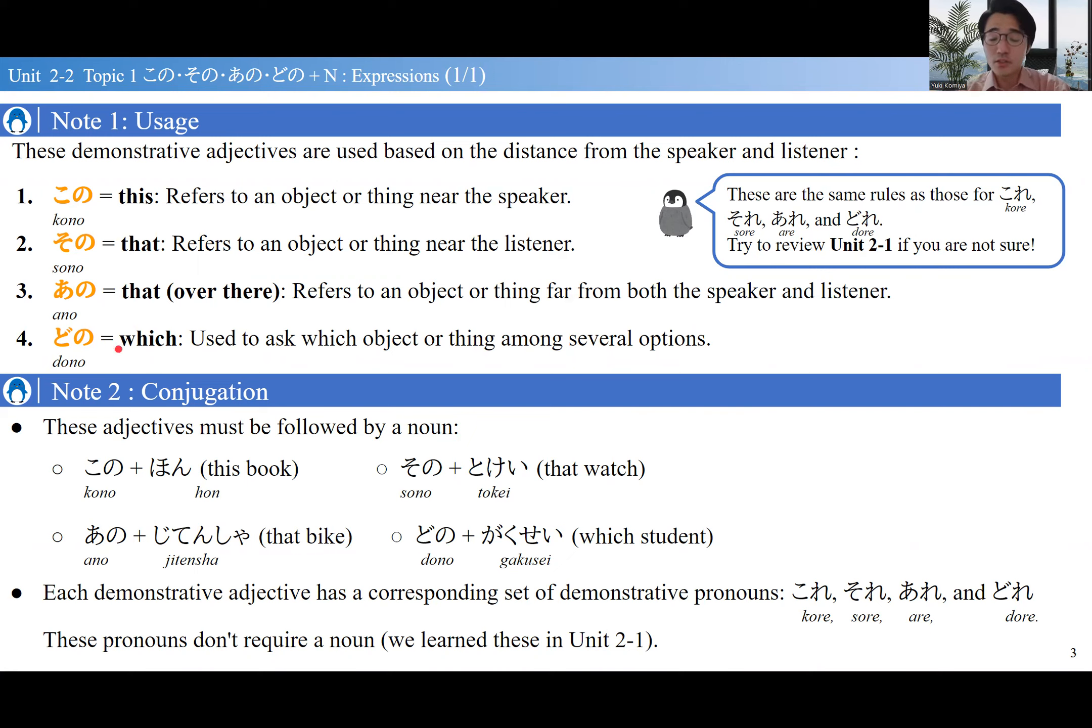Finally, どの plus something is 'which something'—どの時計 (which watch), どの学生 (which student). For conjugation, make sure these demonstratives always follow a noun: この本 (this book), その時計 (that watch), things like that.